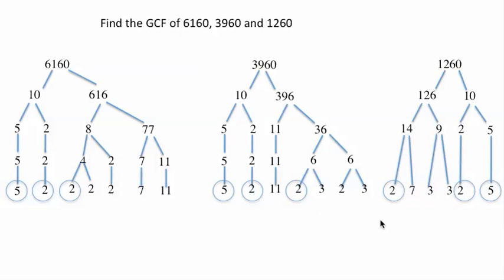Then, all we have to do is take what we circled in all of the trees, just the 3 commons. So, a 5 was common, a 2 was common, and a 2 was common. That's what we're going to multiply. 5 times 2 times 2. So that's 20.